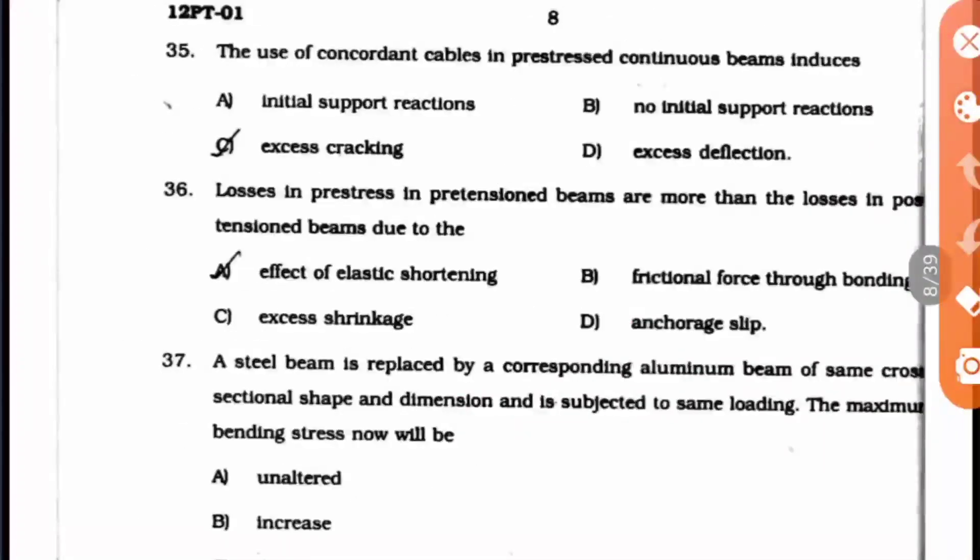Question 35: The use of concordant cables in prestressed continuous beams induces no initial support reactions. Question 36: Losses in prestressed pretension beams are more than the losses in post-tension beams due to what?